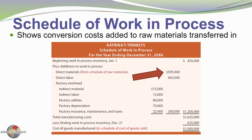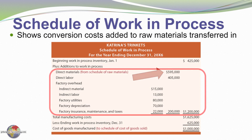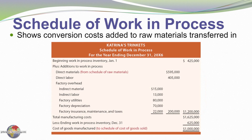This schedule of work in process shows the conversion costs that were added to the raw materials transferred in — adding to that our cost of production, direct labor, and factory overhead assigned for the period. Katrina incurred $1,200,000 of additional manufacturing costs this year. Adding the beginning work in process inventory and subtracting the ending work in process inventory gives us the cost of goods manufactured, which is then transferred into the finished goods inventory.